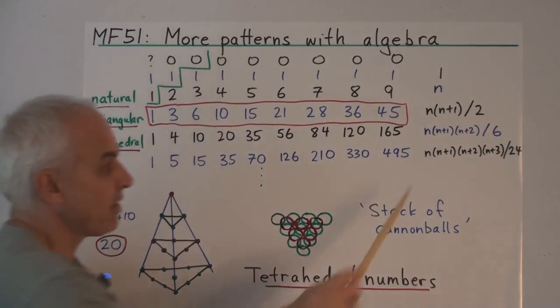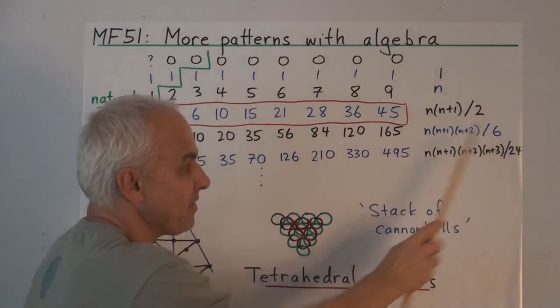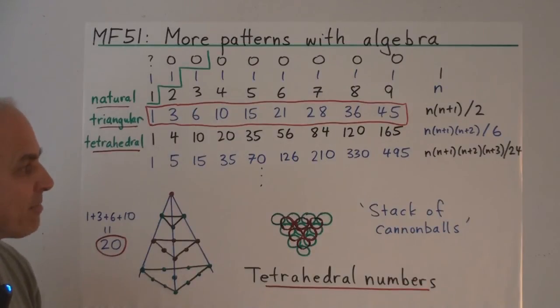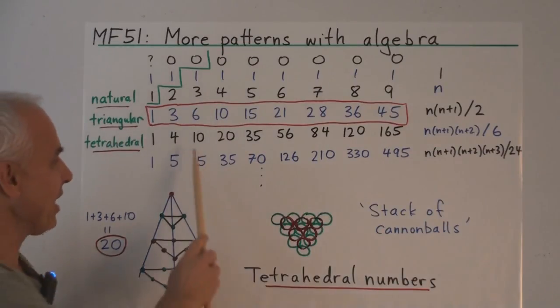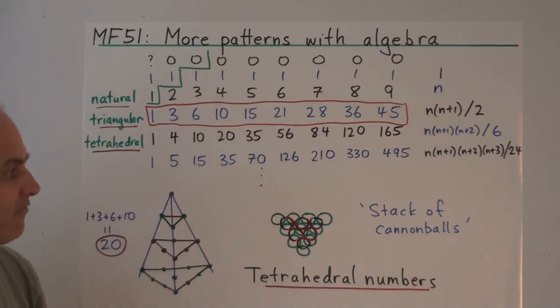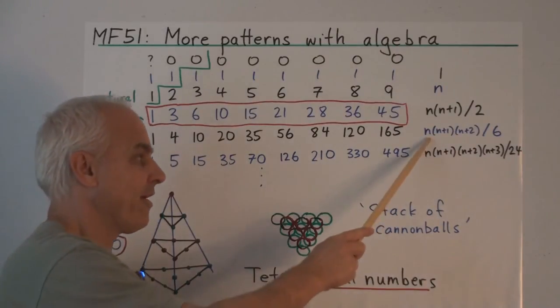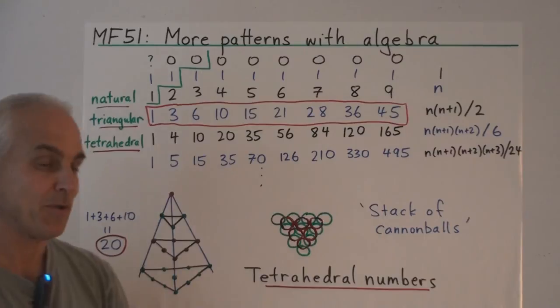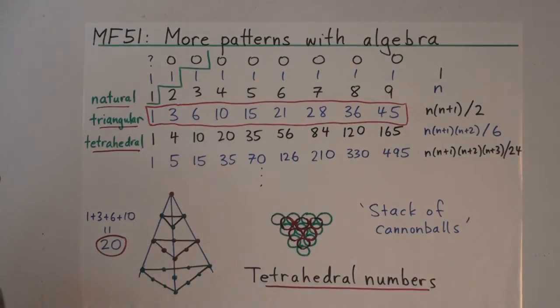So that's a physical meaning to these tetrahedral numbers. And it turns out that their formula is given by this polynomial expression: n times n plus 1 times n plus 2 divided by 6. And you might like to check that. And even better, you might like to try to prove that that's the formula.